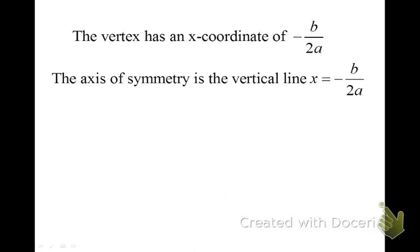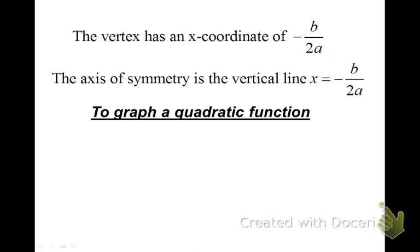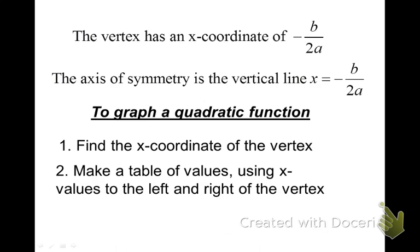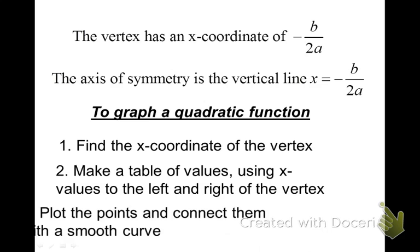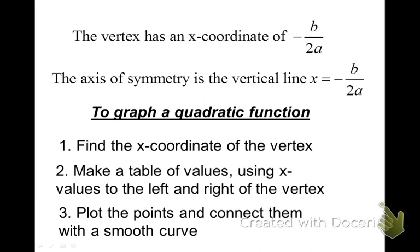To find the vertex, we're going to use negative b over 2a. That's also the axis of symmetry. So whenever we graph a quadratic, first we find the x value of the vertex. We're going to make a table of values, find the y value of the vertex, and then a few more points. Then we plot those points and put a smooth curve to them.